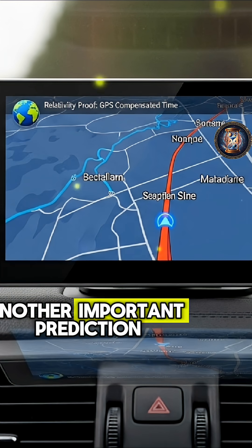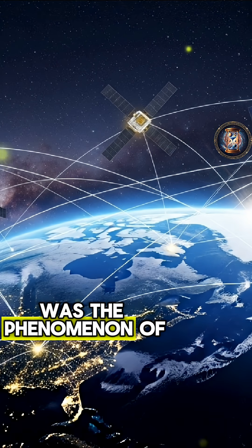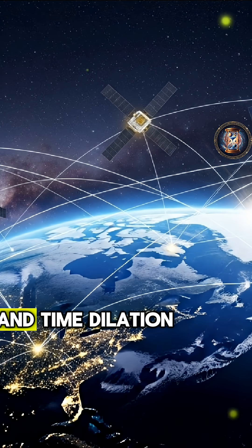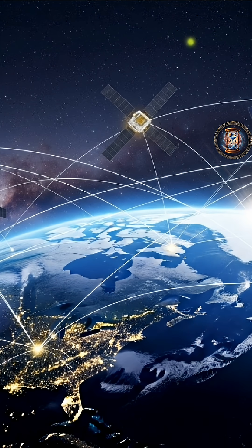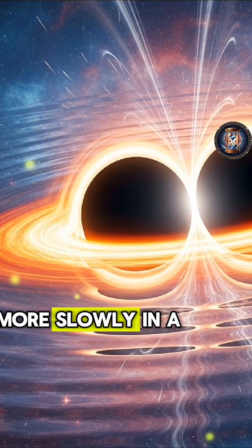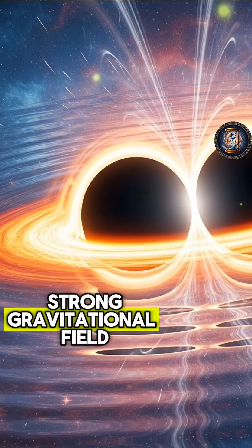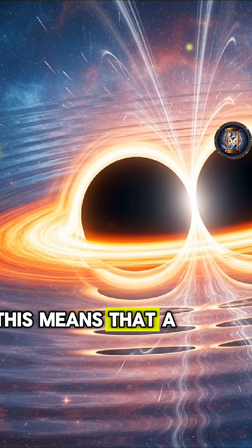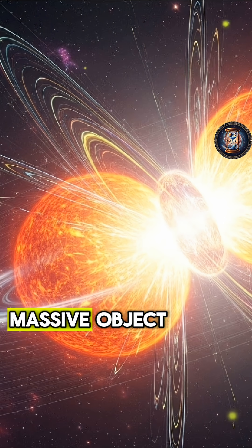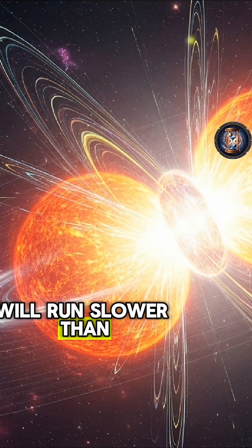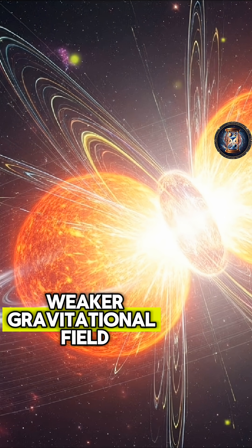Another important prediction was the phenomenon of gravitational redshift and time dilation. This theory states that time will pass more slowly in a strong gravitational field. This means that a clock placed near a massive object will run slower than a clock in a weaker gravitational field.